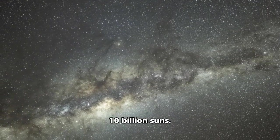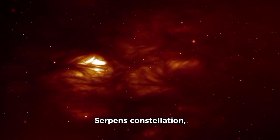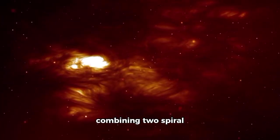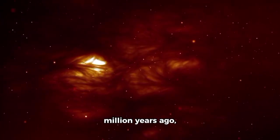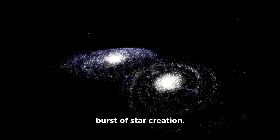The Milky Way is only 10 billion suns. ARP 220 is in the Serpens constellation, about 250 million light years away, combining two spiral galaxies into one 700 million years ago, resulting in a massive burst of star creation.